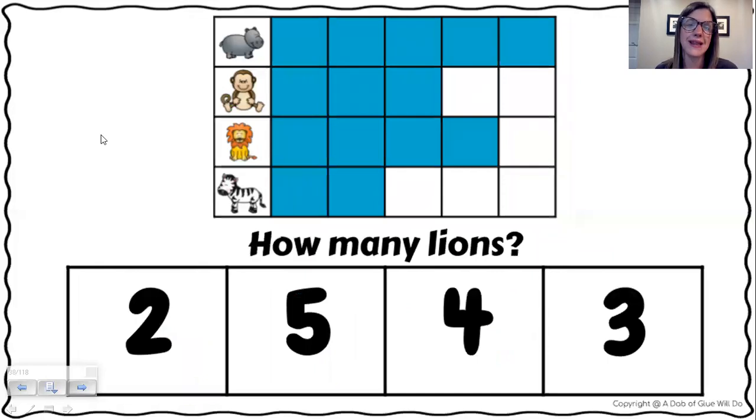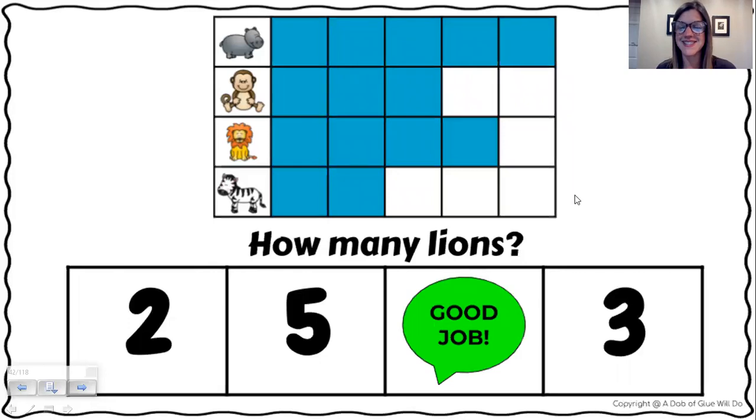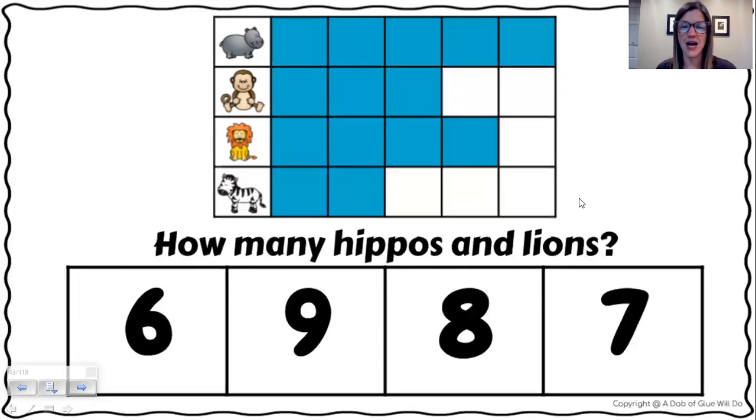How many lions are there? Find the picture of the lion and count next to the lion. I see one, two, three, four. Four lions. Great job.